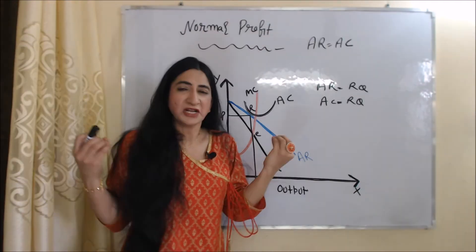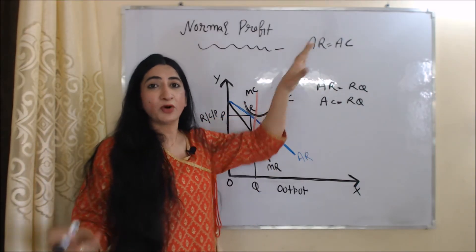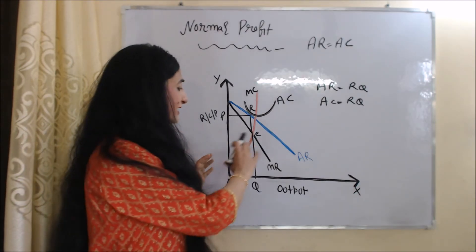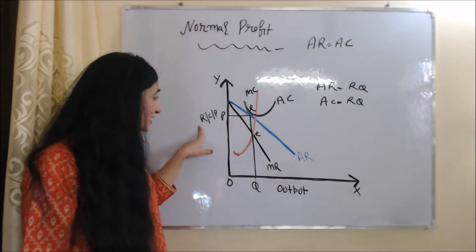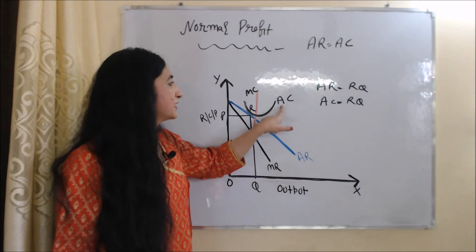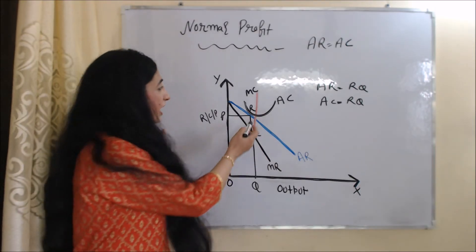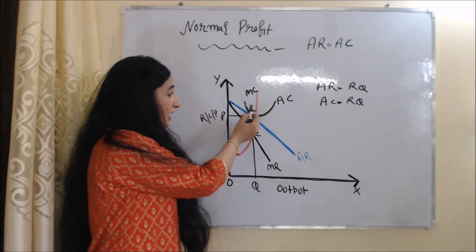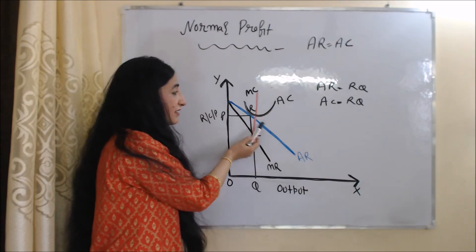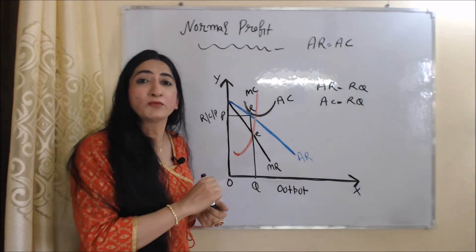Now we are going to talk about normal profit. A firm gets normal profit when AR is equal to AC, or when average revenue is equal to average cost. In this diagram, the X axis shows output and the Y axis shows revenue, cost, and price. MR is the marginal revenue curve, AR is the average revenue curve, AC is the average cost curve, MC is the marginal cost curve, and E is our equilibrium point. Here RQ is our average revenue and RQ is also our average cost, because this R point touches both the AC and AR curves. So at this R point, average revenue equals average cost — this is our normal profit point.